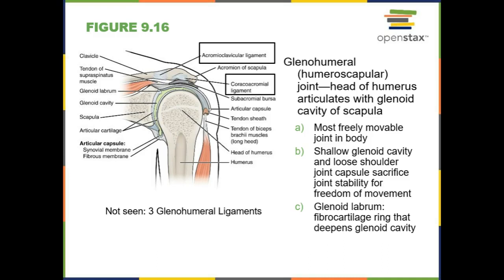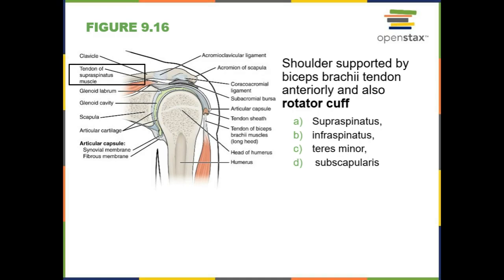There are lots of ligaments and tendons that help to protect this joint. We have the acromioclavicular ligament, the coracoacromial ligament, and three glenohumeral ligaments that hold the humeral head into the glenoid cavity. We also have four rotator cuff muscles that all attach to the humeral head and hold the humerus into that glenoid cavity. One of the major functions of the rotator cuff is to stabilize the joint, allowing the bones to move more easily without worry of the joint coming out of place.